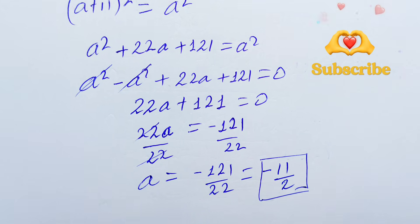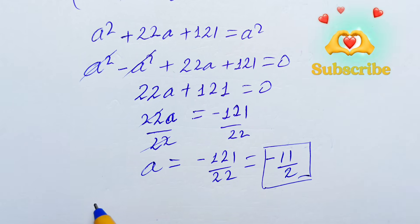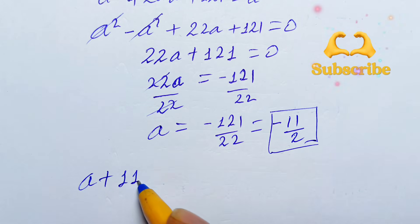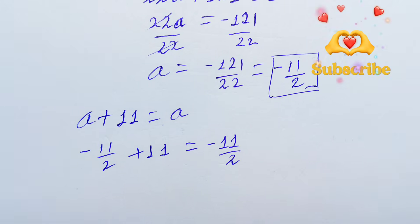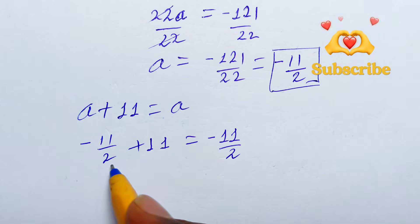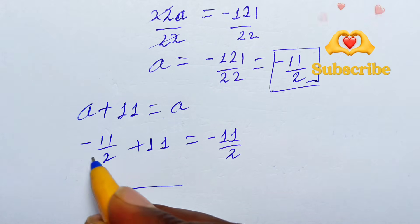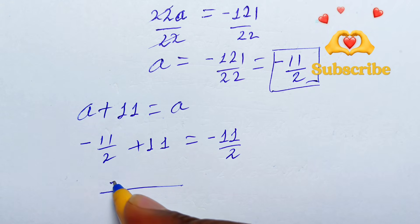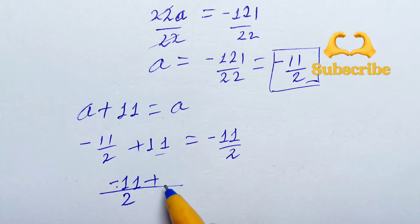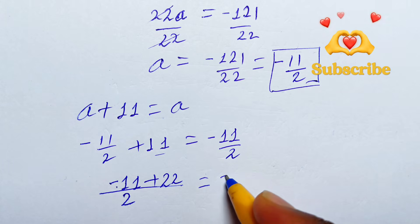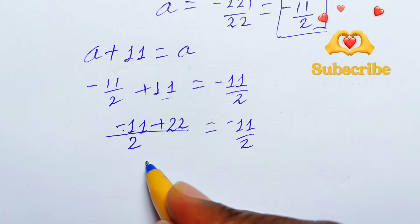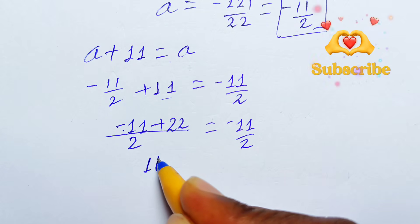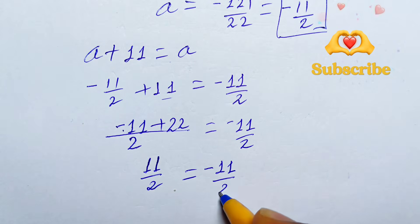Let's verify the value of a by putting it into the original equation. The original equation is √(a + 11) = √a. Substituting a = −11/2: √(−11/2 + 11) = √(−11/2). On the left side, finding a common denominator of 2: −11/2 + 22/2 = 11/2. So the left side gives √(11/2), while the right side gives √(−11/2). These are not equal.